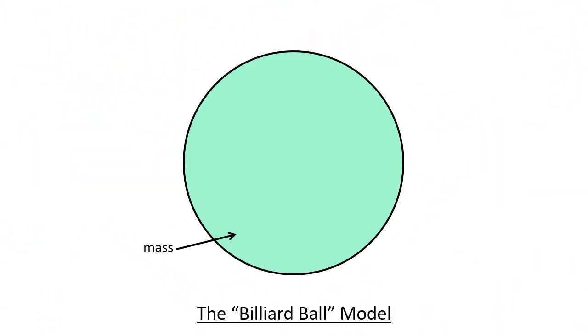For a long time the idea was that atoms are like small billiard balls, solid spheres with the mass uniformly distributed about 10 to the minus 10 meters, and the electrons sort of hidden somewhere inside.